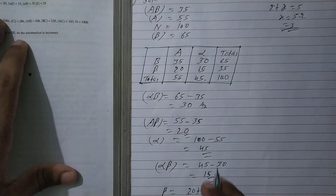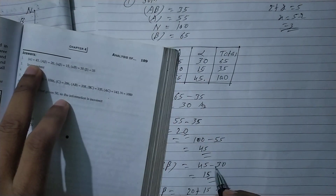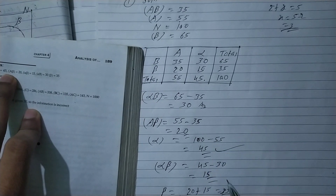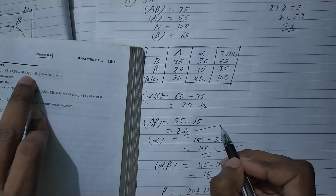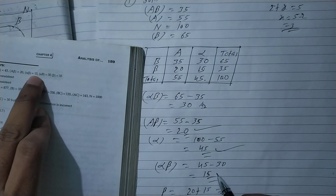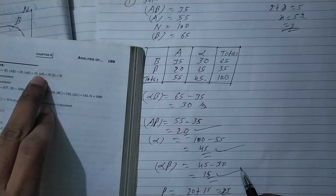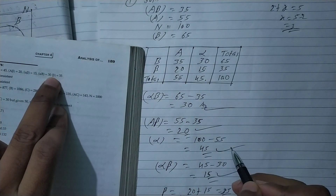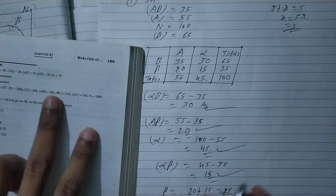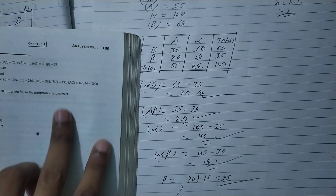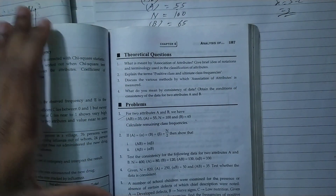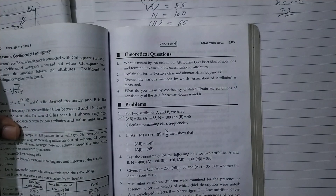So to summarize: alpha is 45, A beta is 20, alpha beta is 15, alpha B is 30, B is 35. The answer is correct. You will solve question number 1 — thank you for watching.